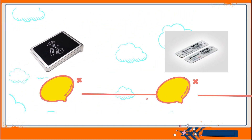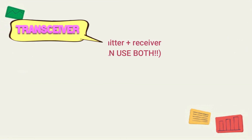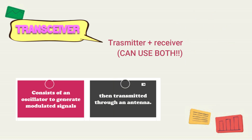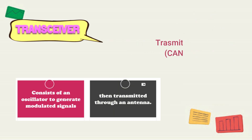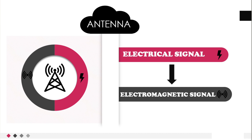The reader works as a transceiver, antenna, and decoder. A transceiver is a combination of transmitter and receiver — it can function as either. It consists of an oscillator to generate modulated signals, which are then transmitted through an antenna. The antenna is a device that converts electrical signals into electromagnetic signals, which are very efficient at propagating through air.